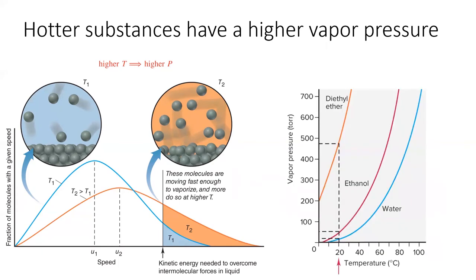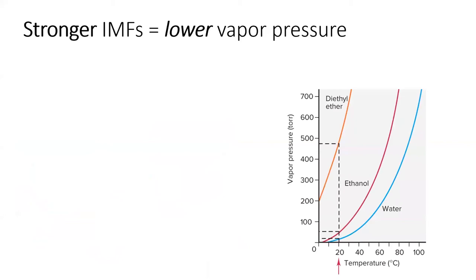If we graph vapor pressure versus temperature, we see that all substances have a higher vapor pressure at increased temperature. This is why water evaporates faster when it's warmer. We'll use this same figure to demonstrate two other facts about vapor pressure.